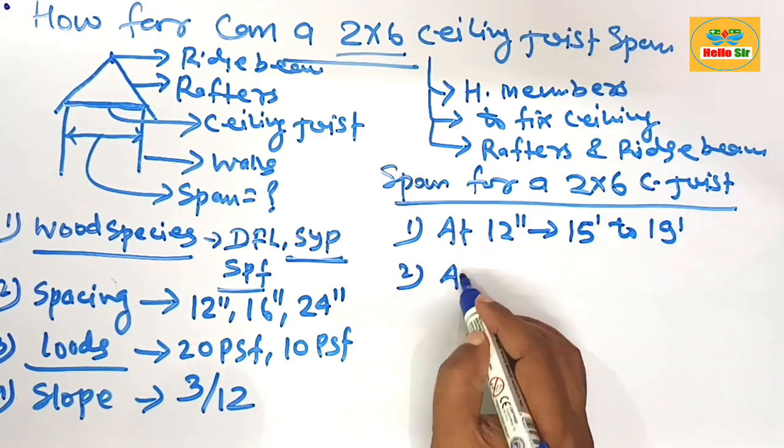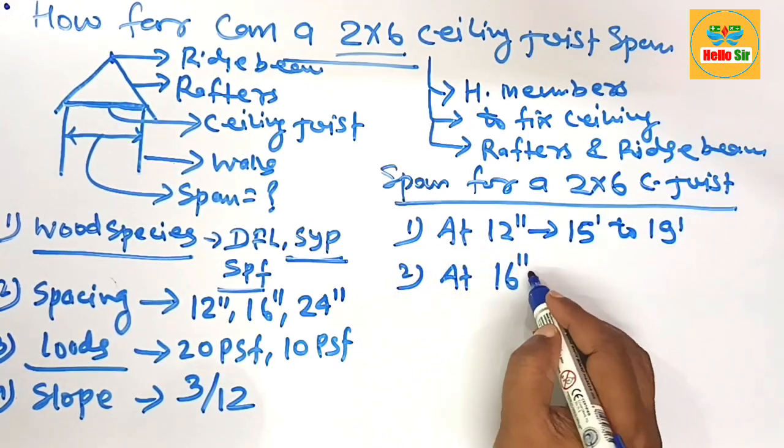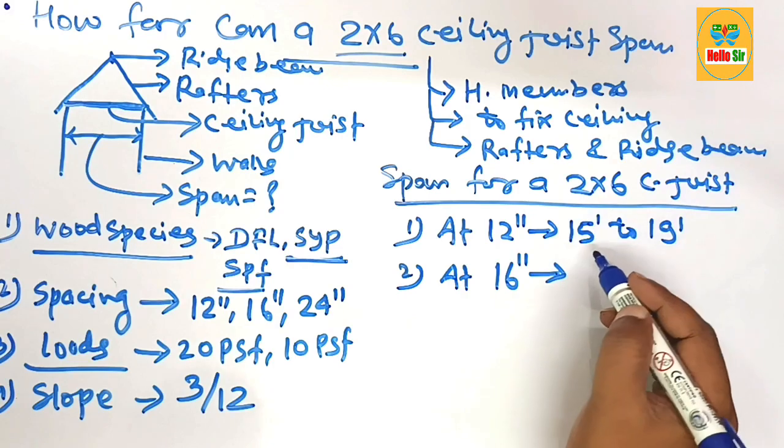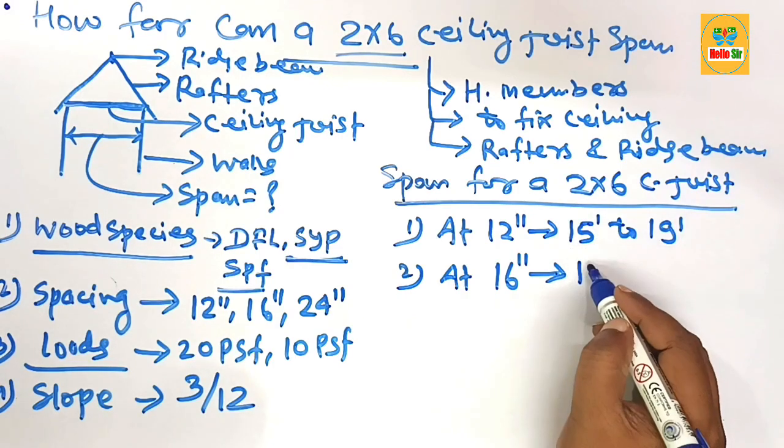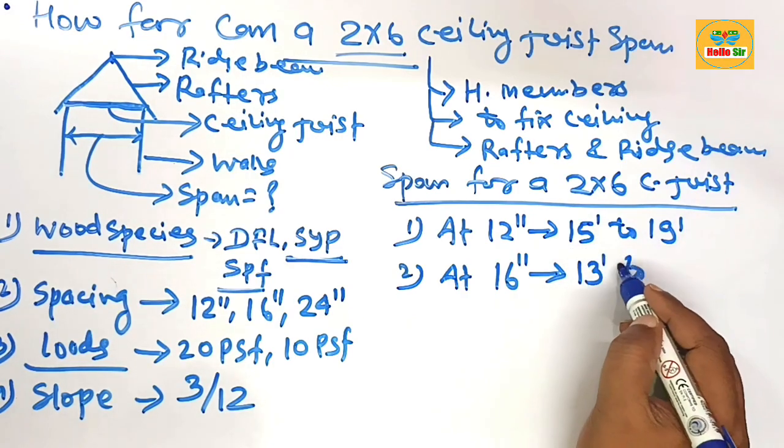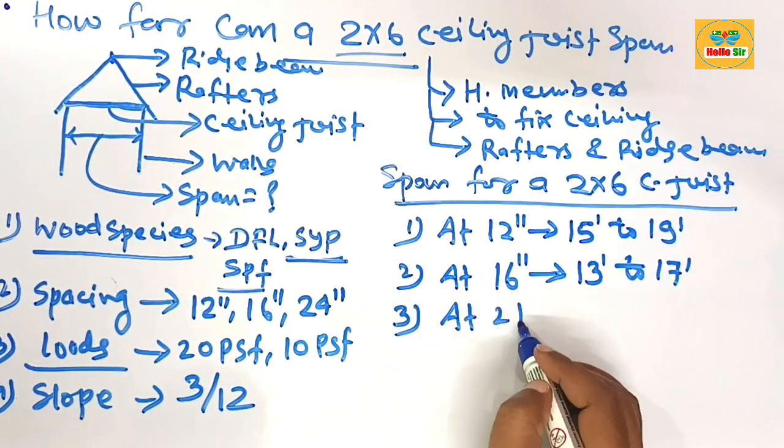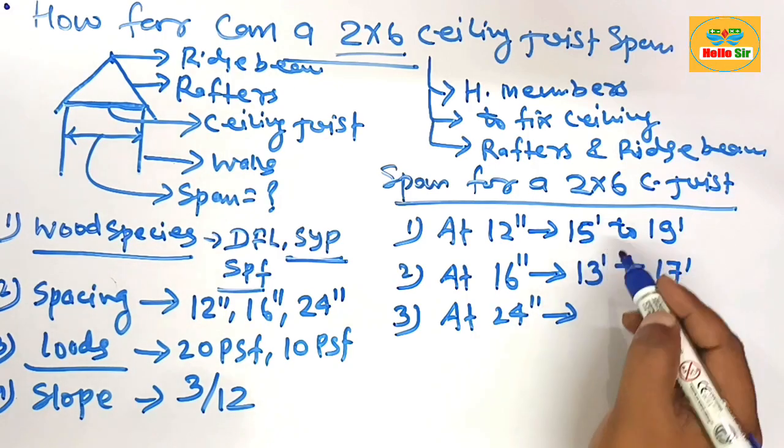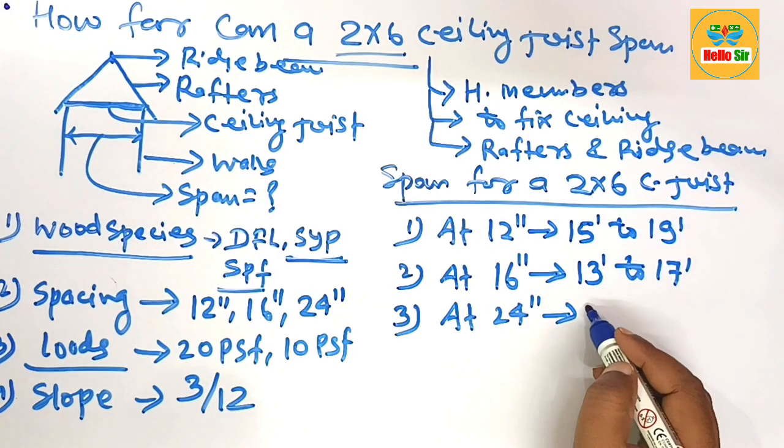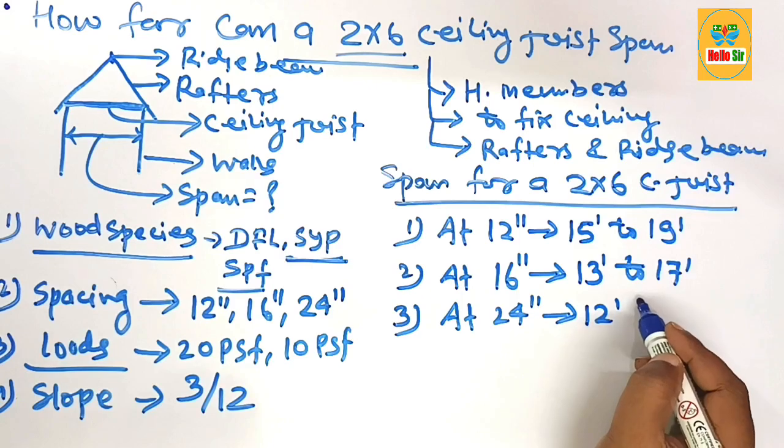At 16 inches of spacing, a 2 by 6 ceiling joist can span from 13 feet to 17 feet. And at 24 inches of spacing, a 2 by 6 ceiling joist can span from 12 feet to 15 feet. Remember this one.